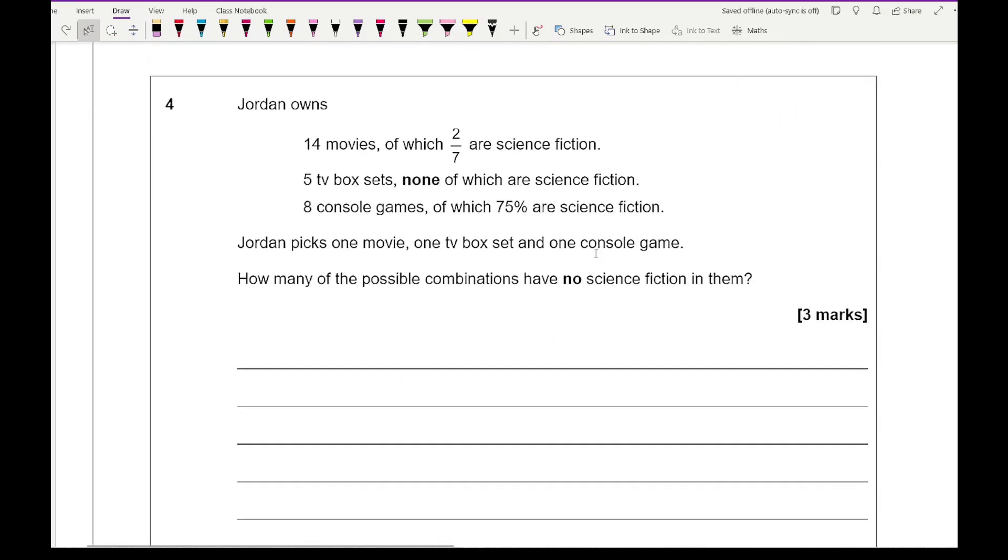Moving on to question 4, it says Jordan owns 14 movies of which 2 sevenths are science fiction, 5 TV box sets none of which are science fiction, and 8 console games of which 75% are science fiction. Jordan picks one movie, one TV box set and one console game. How many of the possible combinations have no science fiction in them? So looking at the movies, I want to work out 2 sevenths of 14. Now 14 divided by 7 is 2, times 2 is 4, so 4 are sci-fi, meaning that 10 are non sci-fi. Then moving on to the TV box sets, well none of them are science fiction, so it's going to be 0 sci-fi against 5 non sci-fi.